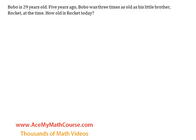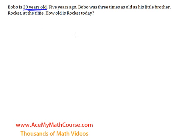Let's continue working on some word problems. Here we have an age word problem. We know that Bobo is 29 years old. Five years ago, Bobo was three times as old as his little brother Rocket at the time. So how old is Rocket today?